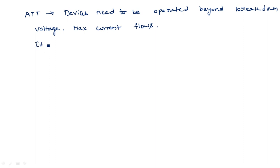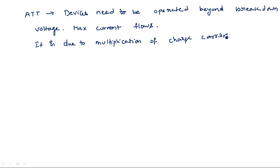This maximum current flows due to multiplication of charge carriers. This is what the avalanche transit time device does — it produces a high amount of current beyond the breakdown voltage due to multiplication of charge carriers. That means one becomes two, becomes four, becomes eight — every time the charge carriers are getting doubled, producing the maximum amount of current.